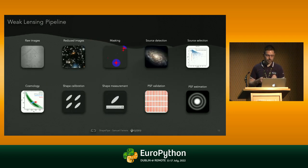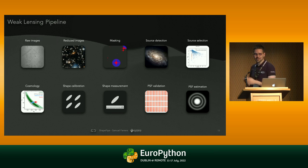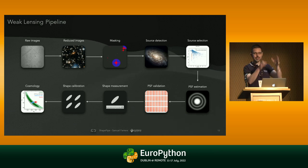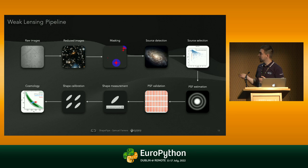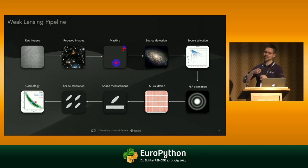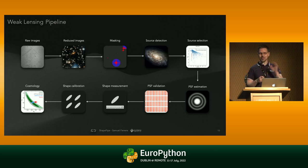Now that we know what weak lensing means, I think everyone knows what a pipeline is, so I can explain what a weak lensing pipeline is. We start with raw images from the telescope — either on Earth or in space. We observe lots of fields of space. Then we need to reduce those images: mask them, detect sources, select sources, estimate the point spread function, validate it, measure the shapes of galaxies, calibrate the shapes, and finally do our cosmology to find out how much dark matter there is in the universe. Sounds simple — lots of steps — but we're going to go through those steps in a bit more detail.